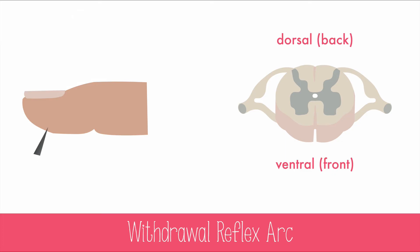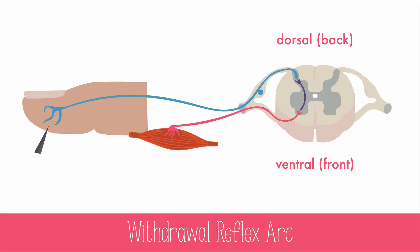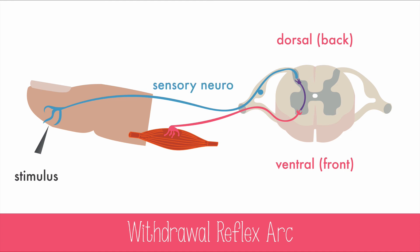A simple three-neuron pain-withdrawal reflex arc works like this. The pain stimulus causes an impulse in the sensory neuron, which has an axon that reaches all the way to the dorsal horn of the spinal cord. There, it synapses with an interneuron, which sends a message to the motor neuron at the end of the ventral horn. The long axon of the motor neuron synapses with the muscles that will contract and pull the finger away from the painful stimulus. So that's: stimulus, to sensory neuron, to interneuron, to motor neuron, to the effector cell.